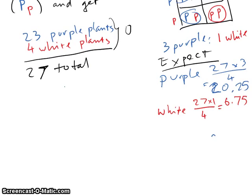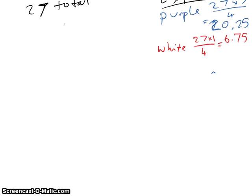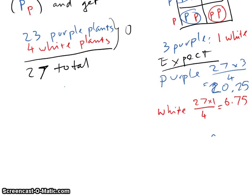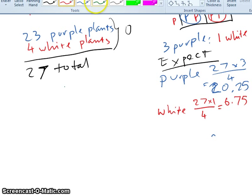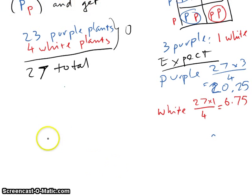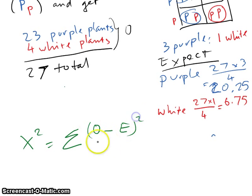So now that I have an expected value and the observed value, I can use my big, hairy, scary formula. Chi-square equals summation of the observed value minus the expected value squared divided by the expected value.